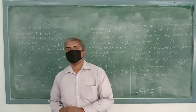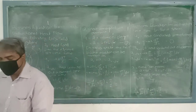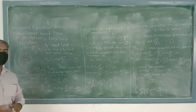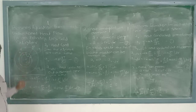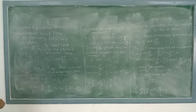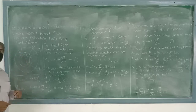Good morning students. Today we are going to discuss the Poisson's equation for the unidirectional heat flow for the infinitely long solid cylinder. Initially we are going to consider one cylindrical portion whose inside radius is small r and outside radius is capital R. The direction of heat flow is in the radially outward direction.